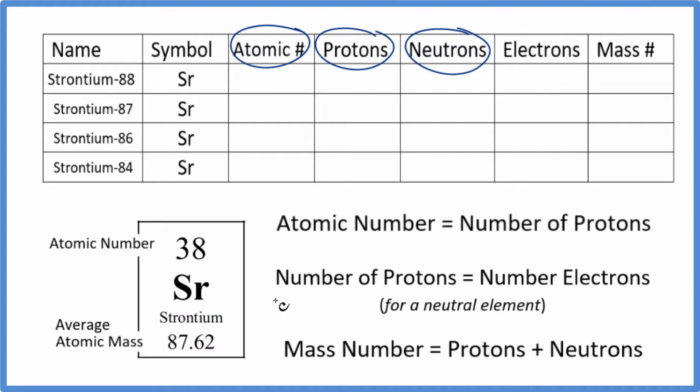So the first thing is, strontium has four naturally occurring isotopes. So these are the isotopes of strontium. They differ only in their number of neutrons. We'll talk about that in a minute though.